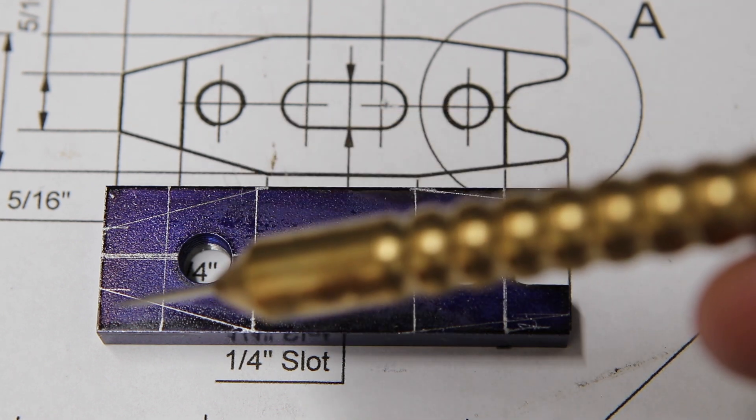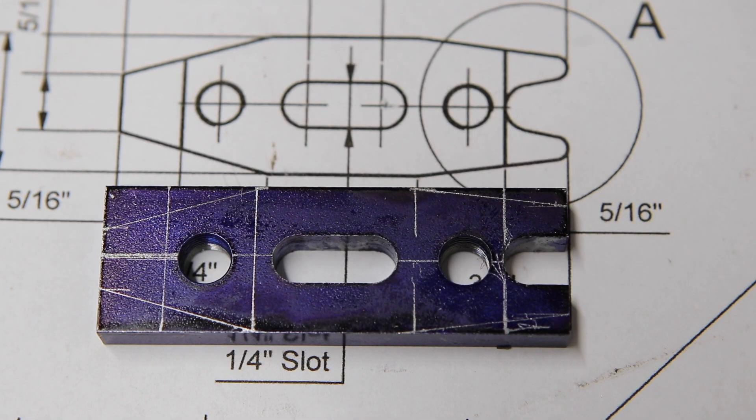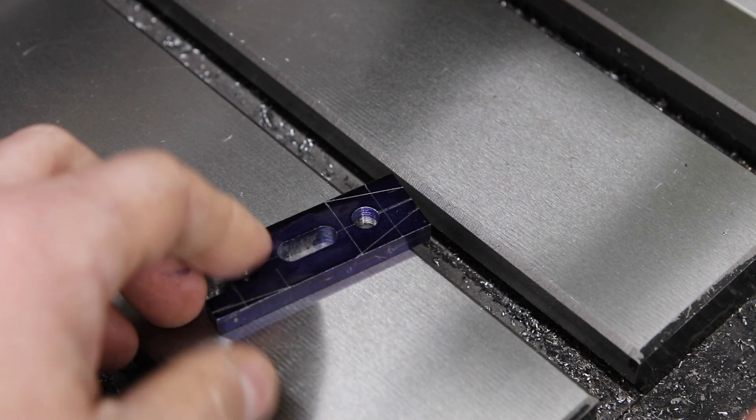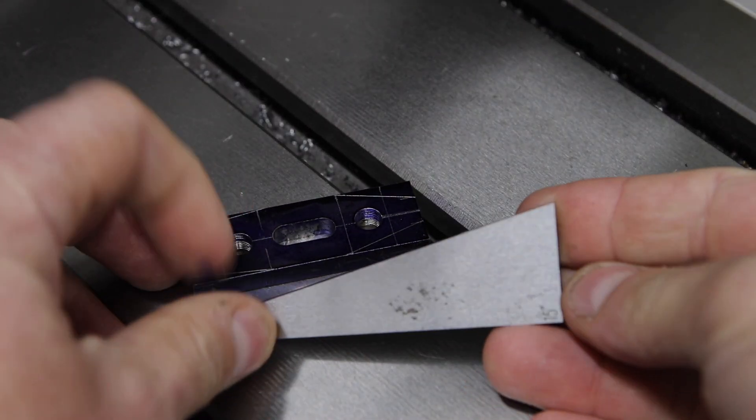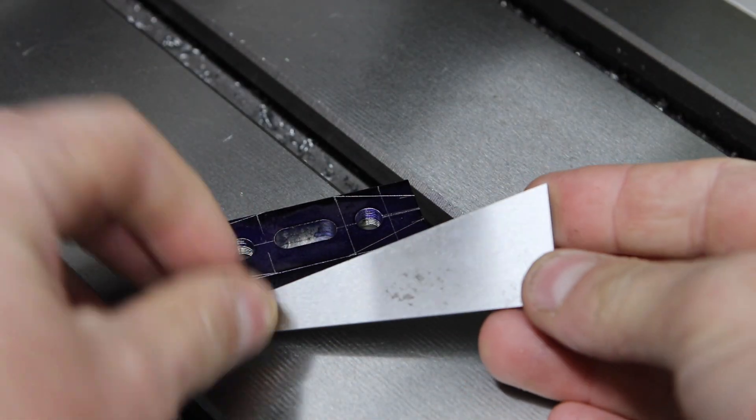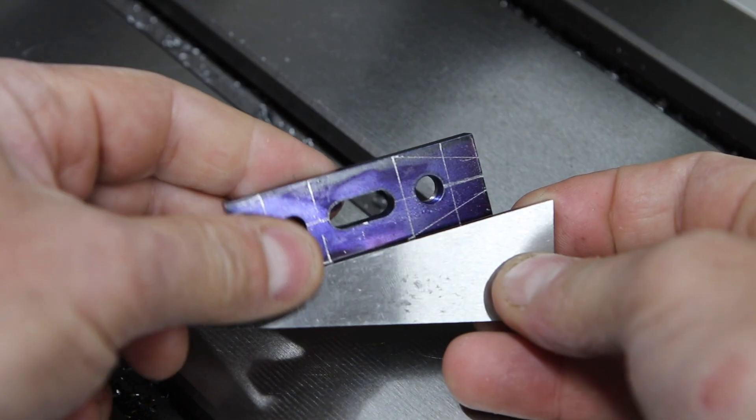Now you could use something like a sine bar but in this instance I've decided to use angle blocks. These are pretty cool, they come in a set, a number of different angles.